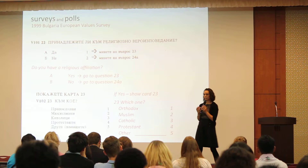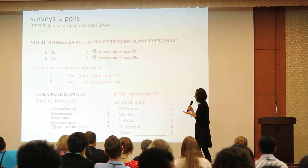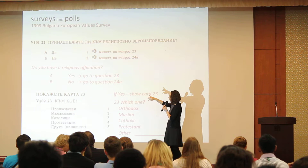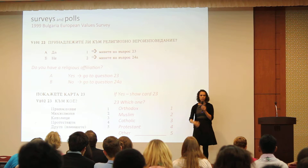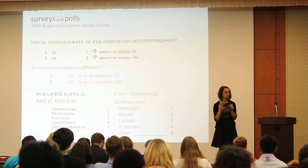The next source is surveys and polls. These are generally smaller-scale, with sample sizes of maybe 2,000 or up to 7,000 people. Here's an example from the 1999 Bulgaria European Value Survey, which asks: 'Do you have a religious affiliation? Yes or no? If yes, which one?' There are lots of surveys in lots of countries that collect data like this. They are not always as reliable as censuses because they're not totally representative of the population, but they strive to be.